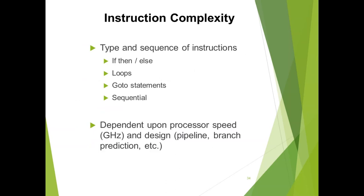Instruction complexity goes back to your actual application: what instructions are you executing? Do you have a lot of loops or branches, or is the code fairly sequential? This can really only be addressed by looking at the application code itself — on the system side, you have to go make friends with your developers. Outside of that, this is highly dependent on the actual processor speed, design, and features — not much you can do if you can't actually change the code.